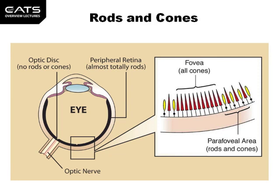The optic disc, where the nerve cells from the retina converge and bundle out into the optic nerve to the back of the eye, contains no rods or cones and therefore forms a blind spot.